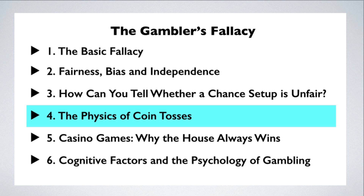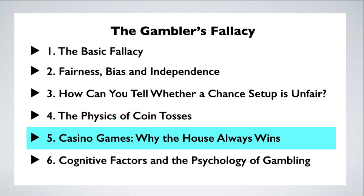In this video I try to resolve that tension. In the fifth video, Casino Games: Why the House Always Wins, I ask whether casino games ever give you a fair bet. The answer is no they don't, and this is something that every person who gambles should understand. But to get to this conclusion, we have to first understand what a fair bet is. In this video I walk through some basic decision theory to show how the expected value of a bet can be calculated, and talk about how casino games ensure that the expected value of a bet is always in their favor.